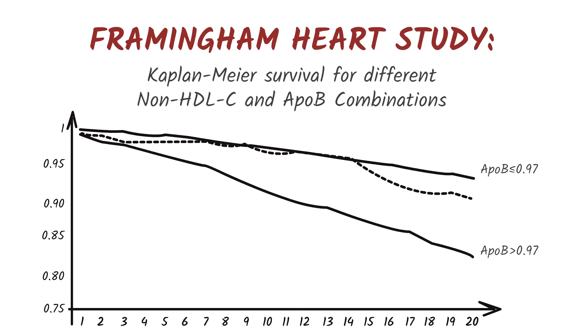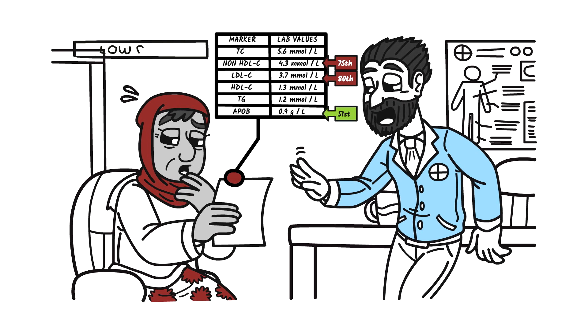The same Framingham Heart Study found that patients with lower ApoB levels have better survival rates, regardless of whether non-HDL-C or LDL-C levels are high or low. And so you conclude that your patient is not at high risk of cardiovascular disease after all.